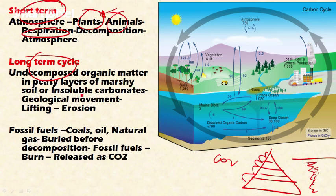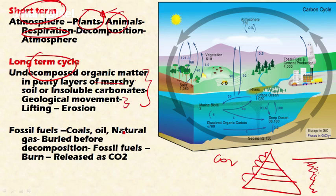In the long-term carbon cycle, undecomposed organic matter in peat layers of marshy soil and insoluble carbonates in bottom sediments of aquatic systems are involved. This takes a long time to cycle because carbon is fixed in the Earth's crust and is not available for immediate cycling. It becomes available only through geological movements — such as lifting of the Earth's crust — when weathering and erosion activities release carbon to the atmosphere. Until then, it remains fixed.